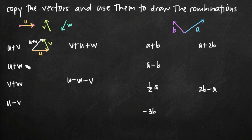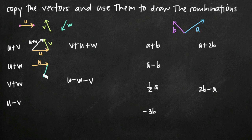The same process applies for u plus w. We start with u, draw it, then attach w to the terminal point of u. So u plus w is the vector from where we started to where we finished.